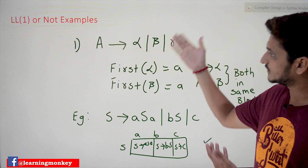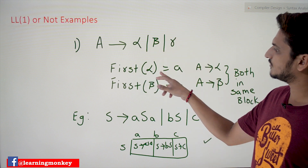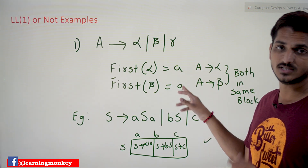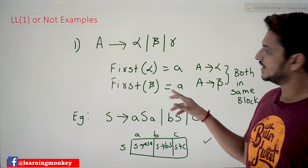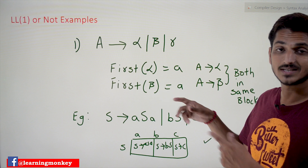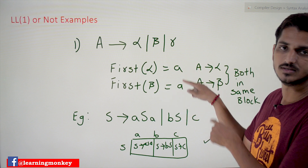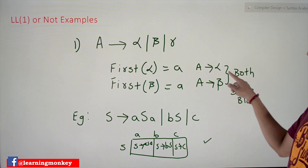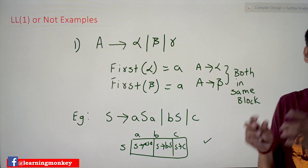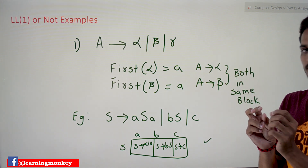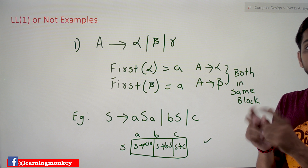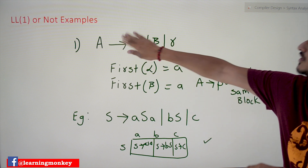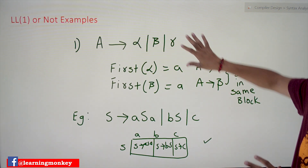Let's take the situation: A → α | β | γ. If our production is of this form, what is First(α)? Assume it is 'a'. What is First(β)? Assume it is also 'a'. That means α and β have the same first symbols. So A → α and A → β both come into the same block — that is a failure case.